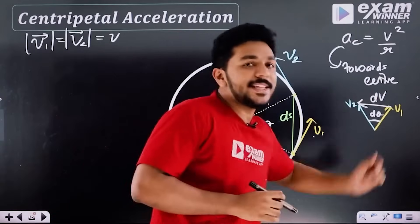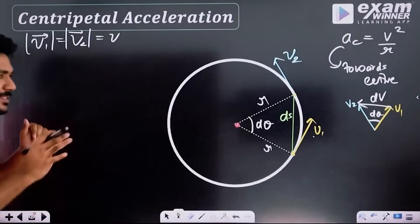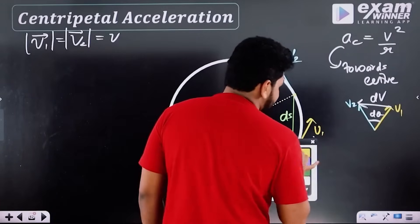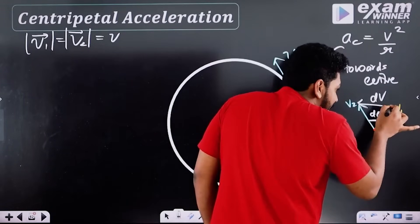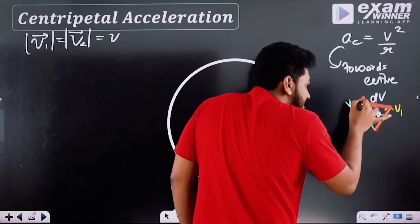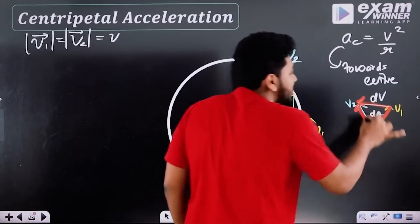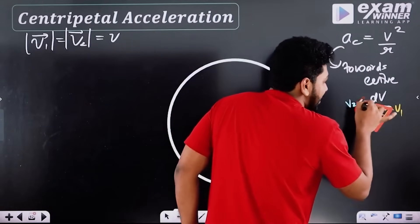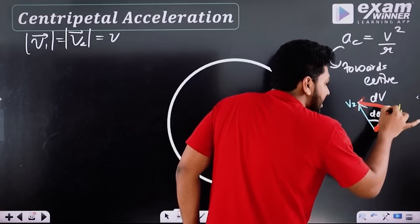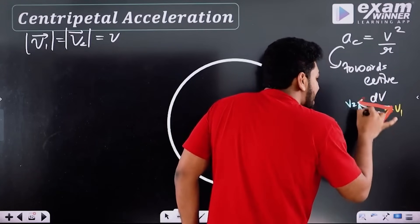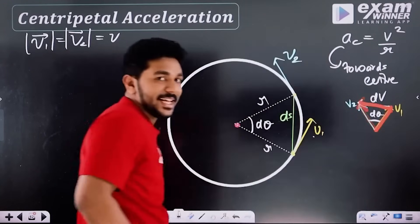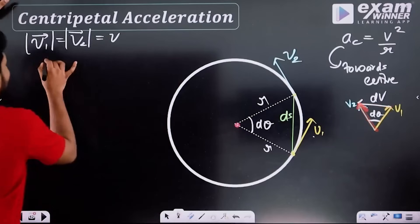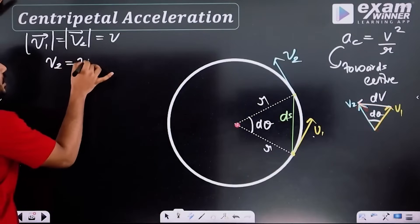I'm going to place this as dv. Put this triangle within the triangle. The sum of the result is v to the third side. This is a vector, this is another vector, two of them are the same. The third side: v2 is equal to v1 plus dv.